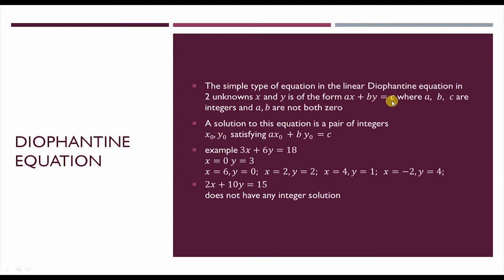We will consider one example: 3x plus 6y is equal to 18. Here x and y are two unknowns. We have to find the integer values of x and y which satisfy the given equation. We can observe that if we substitute x equal to 0 and y equal to 3, we get 3 into 0 plus 6 into 3, that is 0 plus 18, which equals 18.